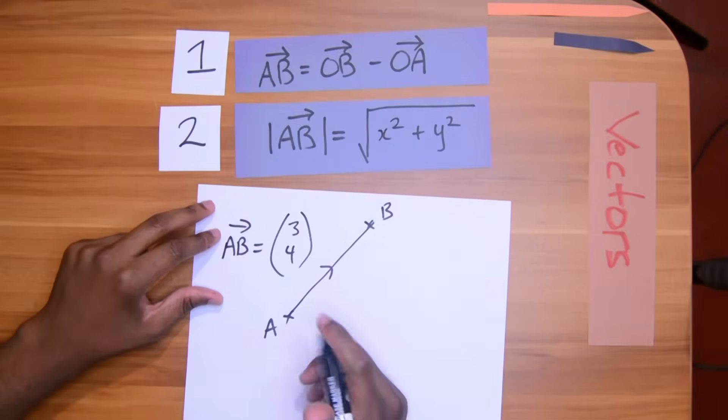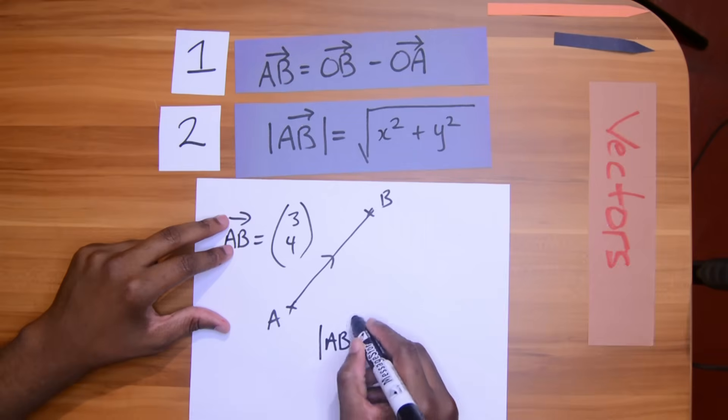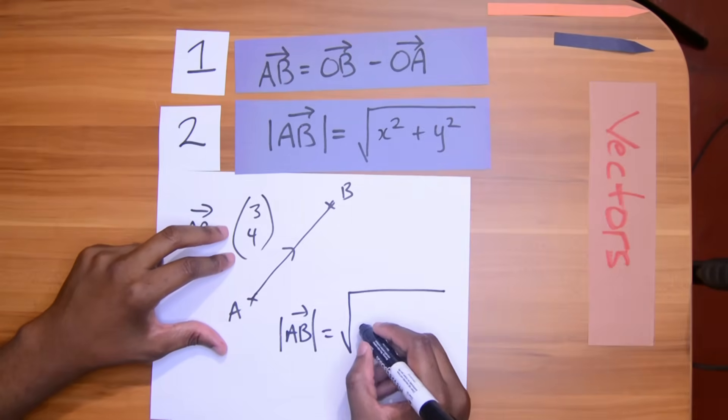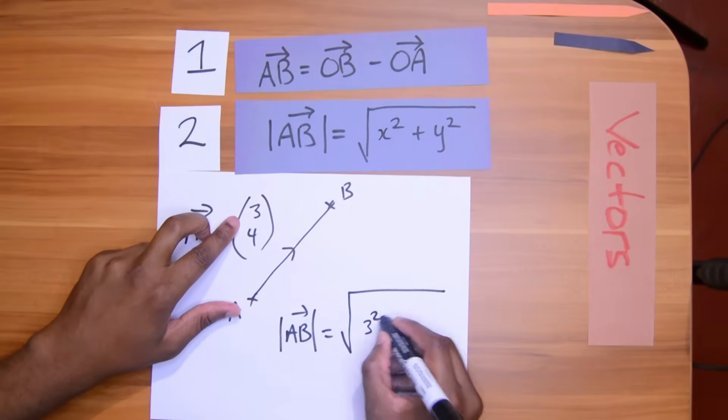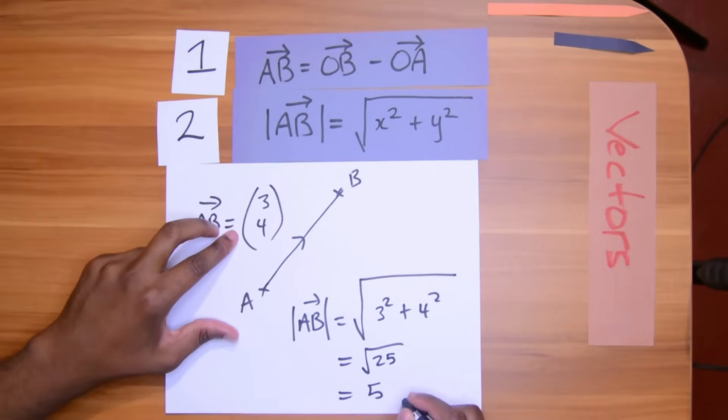So if we want to find out how long vector AB is, we will come now and say the magnitude of AB is equal to the square root of x squared, 3 squared, plus 4 squared. 3 squared plus 4 squared, that's 9 plus 16. That's the square root of 25. So it means this vector is 5 units long.